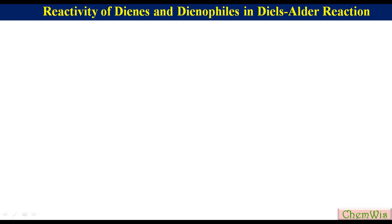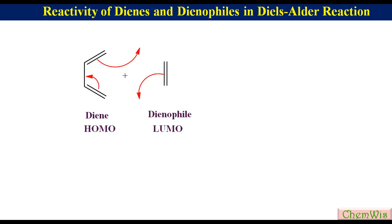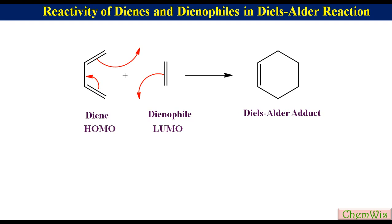The topic of today's discussion is reactivity of dienes and dienophiles in the Diels-Alder reaction. In the Diels-Alder reaction under normal electronic demand, the HOMO of the diene combines with the LUMO of the dienophile. There are two components: the diene and the dienophile, so the rate is affected by the nature of both.